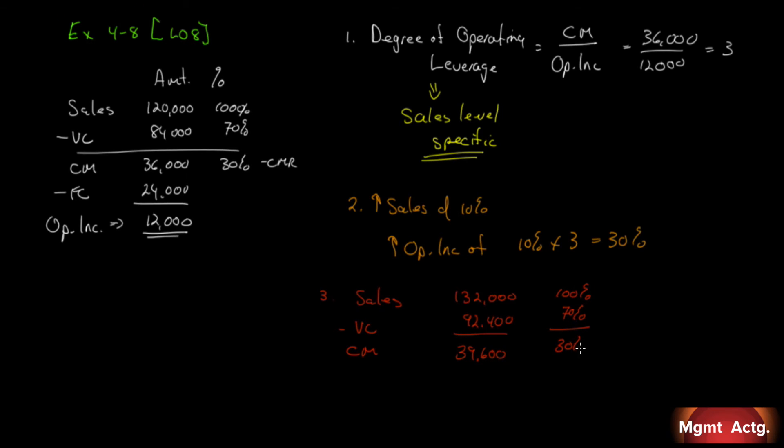And we know that this is 30%. So this here stays constant with this over here. So we can use some of these numbers to fill in some of the other numbers that we may not be sure of. Less our fixed costs, they'll stay the same, 24,000. And that will give us an income of 15,600.